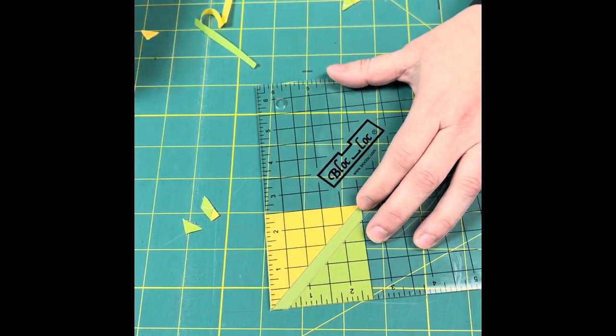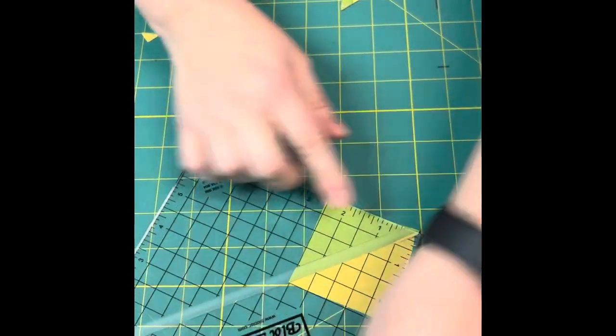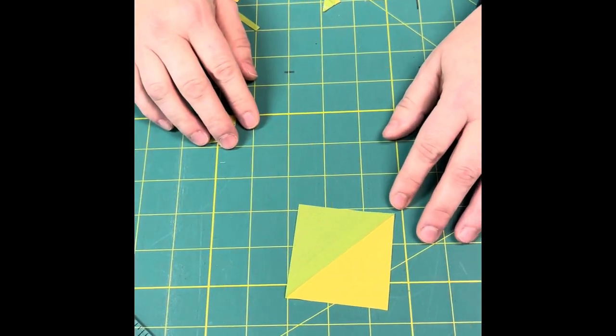So remember, if you rotate clockwise, it will push your block all the way around. And I have a perfect half square triangle.